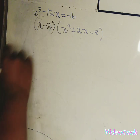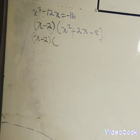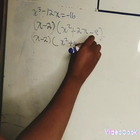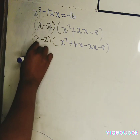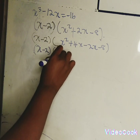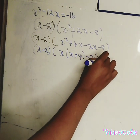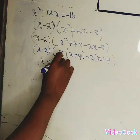Let's factorize x squared plus 2x minus 8. Multiplying negative 8 and x squared gives negative 8x squared. The factors of negative 8x squared that give positive 2x are positive 4x and negative 2x, so we write x squared plus 4x minus 2x minus 8. Factorizing by grouping: x of x plus 4, minus 2 of x plus 4, gives x minus 2 times x plus 4.